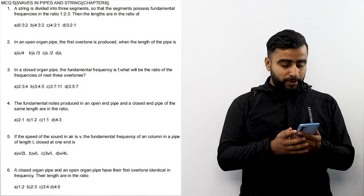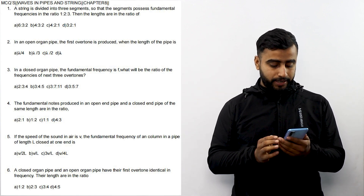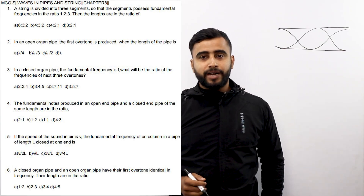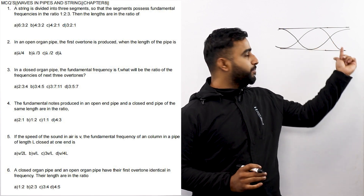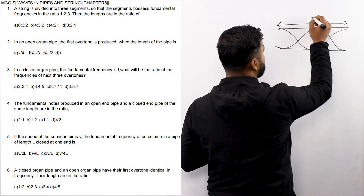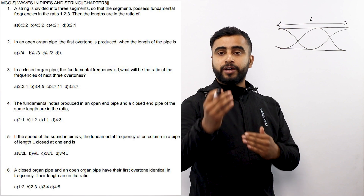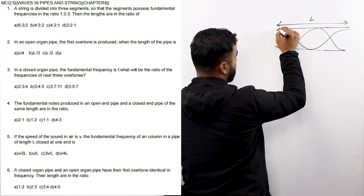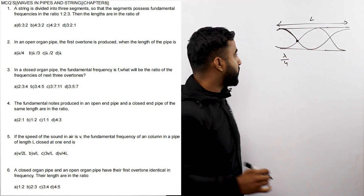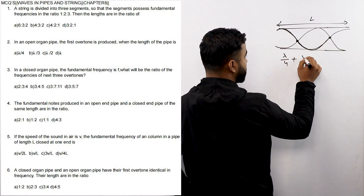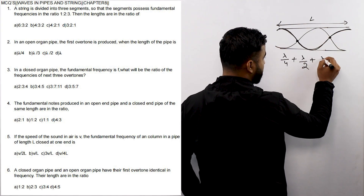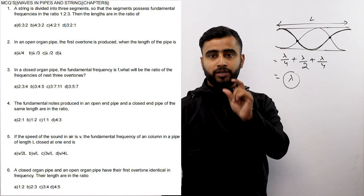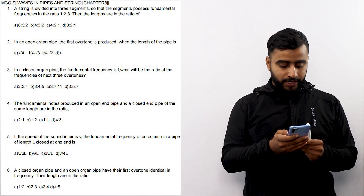Question number 2: In an open organ pipe, the first overtone is produced. When the length of the pipe is expressed in terms of wavelength lambda, what is the length of the pipe for the first overtone in an open organ pipe? The answer is lambda.